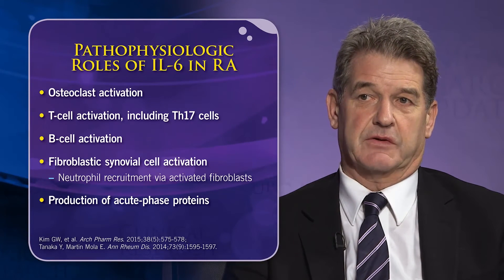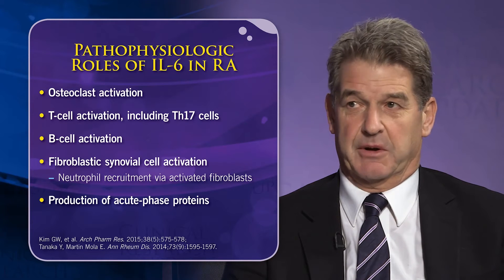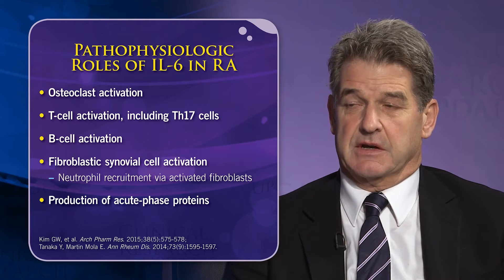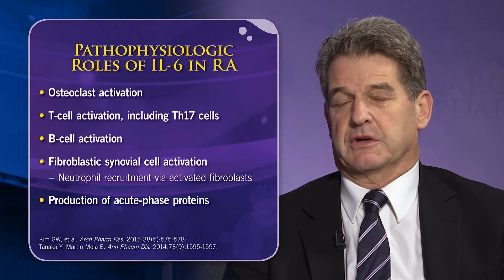Sarilumab is probably the most exciting pipeline agent, with data nearing the stage where they can be submitted for license approval — so we will soon have more than one IL-6 blocker available. IL-6 is such a pleiotropic cytokine; it affects the skin, and particularly the bone, where it is a major activator of osteoclasts. Rheumatoid arthritis is very much a bony disease — patients get systemic osteoporosis and local osteoporosis.